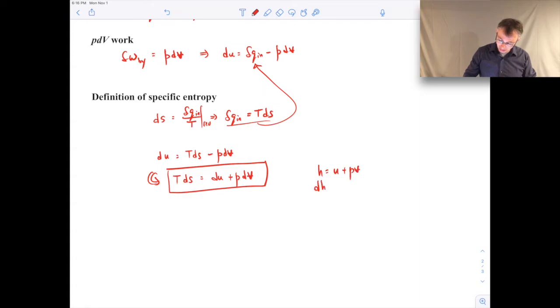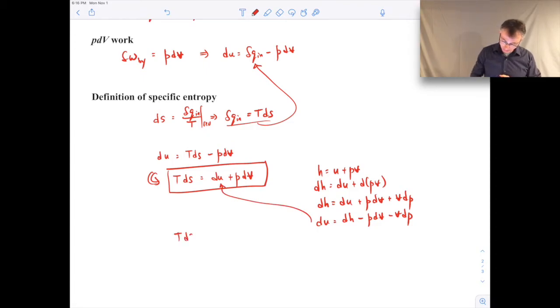So if I do a DH, that's going to be DU plus DPV, and then that can be expanded to be PDV plus VDP. So I'm just writing the small change in specific enthalpy is equal to a small change in specific internal energy plus PDV plus VDP. Then I can write DU as DH minus PDV minus VDP. And then I can substitute that in right up in there, and then I'll get my second Tds equation.